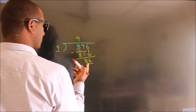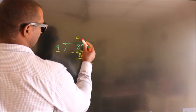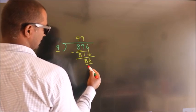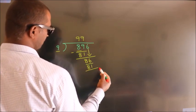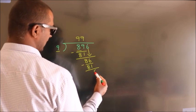A number close to 86 in the 9 table is 9 nines, 81. Now we subtract. We get 5.